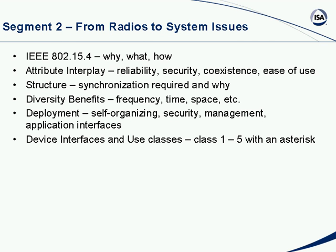Now we're going to talk about radios. 802.15.4 is the radio that has been selected — it's an IEEE standard. We'll talk about how its attributes play together to make up the ISA 100.11a standard with respect to the radio and how it plays off against reliability, security, coexistence, and ease of use. We'll talk about the structure of the standard, synchronization and why it's necessary, the benefits of diversity in frequency, time, and space, and how deployment is done for self-organizing, secure, well-managed, and application interfaces. We'll also talk about FICE interfaces and use classes 1 to 5.